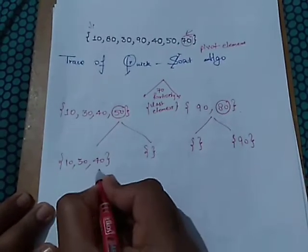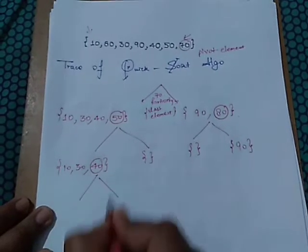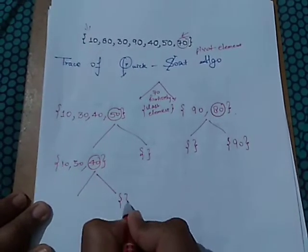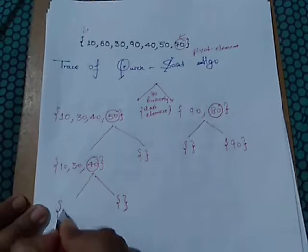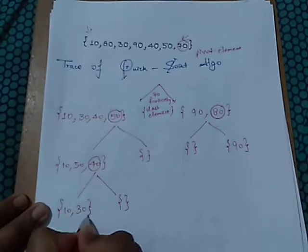Now again this will be broken down and 40 is taken as the pivot element. On the right-hand side the array is empty. On the left-hand side we will get 10 and 30.